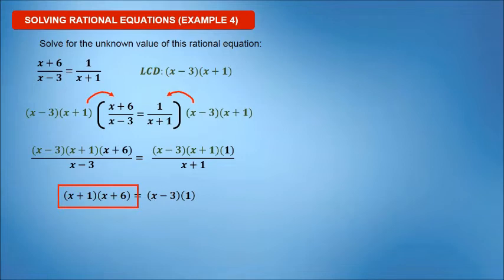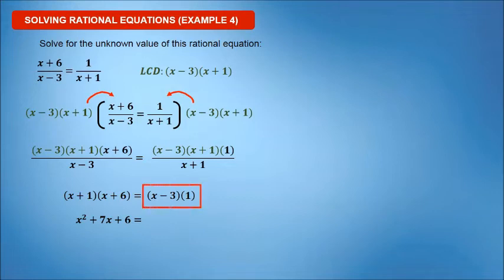Simplify further. Multiply x plus 1 and x plus 6. The result is x squared plus 7x plus 6. Multiply x minus 3 and 1. The result is x minus 3.